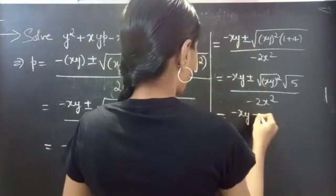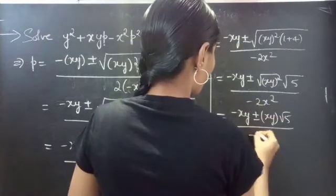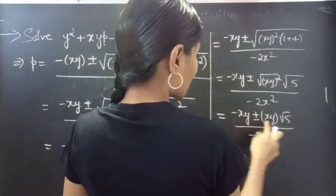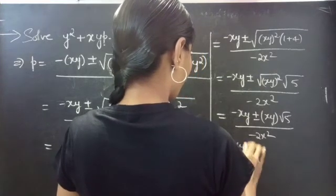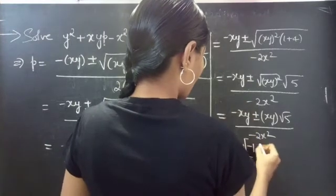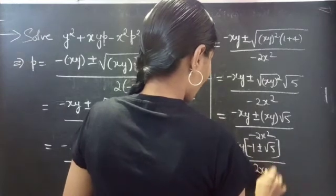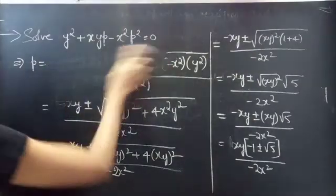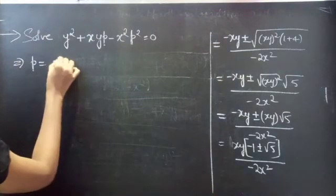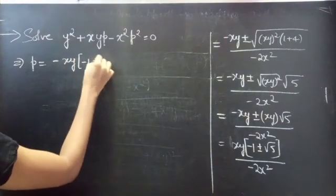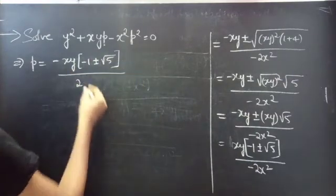So the expression becomes minus xy plus or minus xy·√5, divided by minus 2x squared. Since we have xy on both terms, we can take it as common factor, giving xy times (minus 1 plus or minus √5), divided by minus 2x squared. We can then cancel x to get minus y times (minus 1 plus or minus √5) divided by 2x.